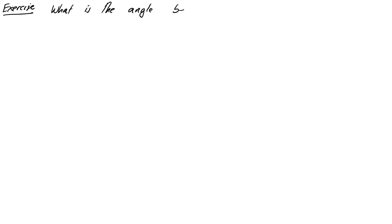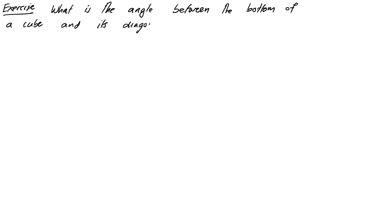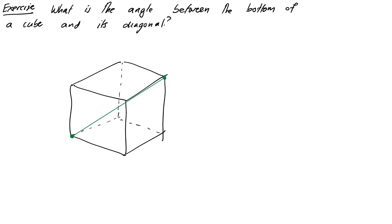Let's do an exercise to check we've understood the angle properties. The exercise is: what is the angle between the bottom of a cube and its diagonal, going from a bottom corner to the opposite corner on the top? On the face of it, that looks kind of tricky, but actually it's not as bad as it looks. Let's draw ourselves some axes, because we need to have some vectors. I'm going to draw some three-dimensional coordinates: x, y, and z.